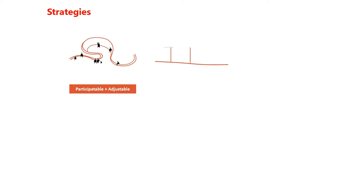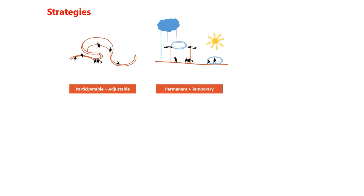The strategies to achieve these aims are as follows. First, participatable and adjustable architecture: guide people to utilize the park more efficiently by providing participatable and adjustable architecture for varied activities. Second, permanent and temporary structure: make the place with both permanent and temporary structures to improve resilience and adaptability.